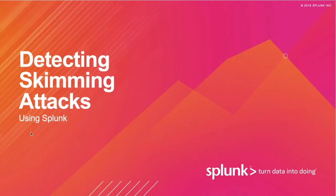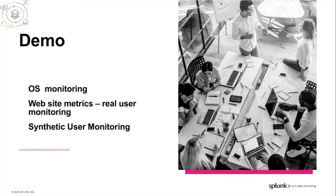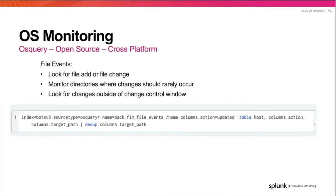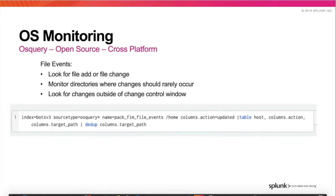Now let's look at ways that you can use Splunk and your existing data to detect virtual card skimmers. Today we're going to cover three areas of detection: OS monitoring, website metrics using real user monitoring, and synthetic user monitoring. Realizing that virtual card skimmer attacks rely on changing or adding files, we should first look for unexpected file system changes. OS query is an open-source and cross-platform tool used to monitor all kinds of server statistics. You can find it online for free and monitor the logs it creates with Splunk.